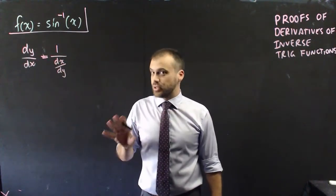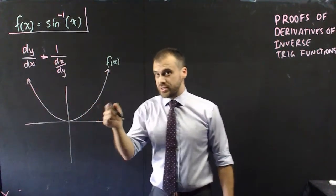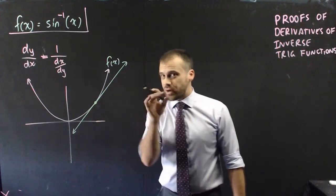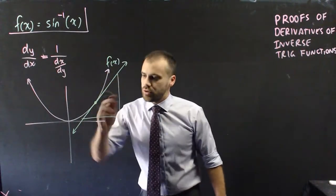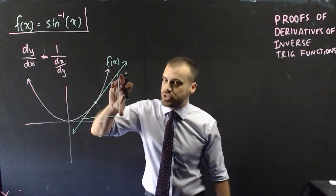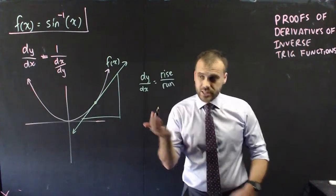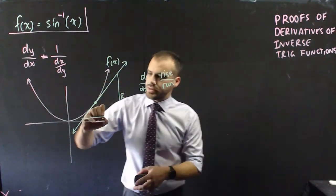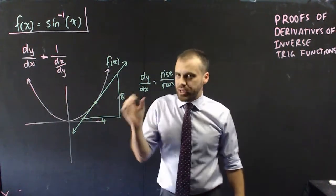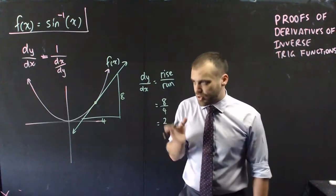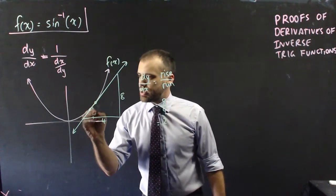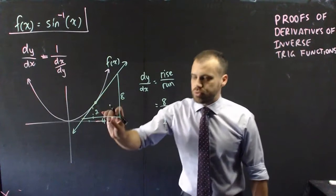Geometrically, this makes a lot of sense. If this is a function f of x, the derivative tells us the gradient of a tangent at any point. The gradient of a tangent is like the old rise over run — that's why it's dy/dx, the change in y with respect to x. So in this case, if the length of this bit here is 8 and the length of that bit there is 4, rise over run would be 8 over 4, which is 2. That 2 represents: for every 1 that we go across, we go 2 up.